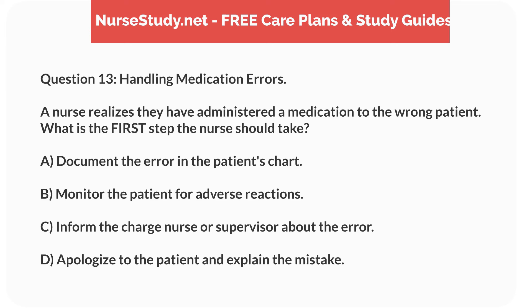Question 13. Handling Medication Errors. A nurse realizes they have administered a medication to the wrong patient. What is the first step the nurse should take? A. Document the error in the patient's chart. B. Monitor the patient for adverse reactions. C. Inform the charge nurse or supervisor about the error. D. Apologize to the patient and explain the mistake.